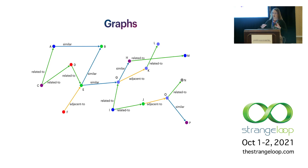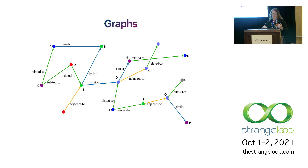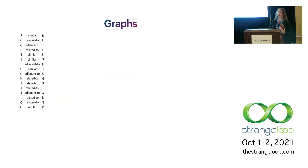Nodes won't share a label but edges usually will. So we can have several things that are 'similar to' other things, or things which are 'related to' other things. Each individual edge definition is described with its starting node, the edge label, and the terminating node. Those definitions form statements, and that provides an alternative representation for a graph — the same information that was being shown in the image a moment ago.